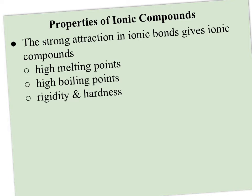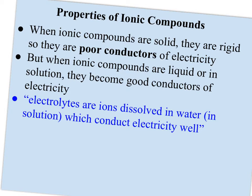The strong attraction is the reason that ionic compounds have high melting points. If they have high melting points, they're also going to have high boiling points because you have to melt before you boil. They also tend to be rigid and hard. Even though they shatter when you hit them with a hammer, they're still rigid and hard — it's just when you apply a force that they break apart. When ionic compounds are a solid, they're poor conductors, because they're rigid and electricity is the movement of charge. If you can't move the charges, it's going to be a poor conductor.